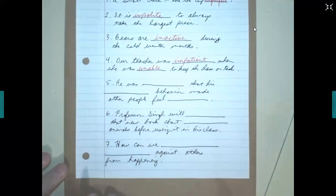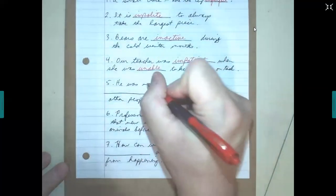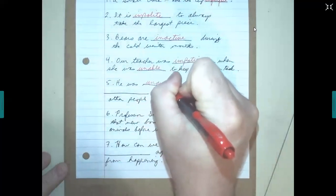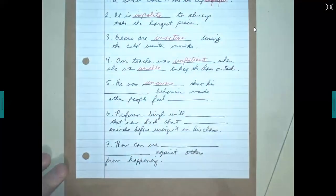All right. Number five, he was blank that his blank behavior made other people feel blank. So let's say he was unaware or not aware. He was unaware that his...